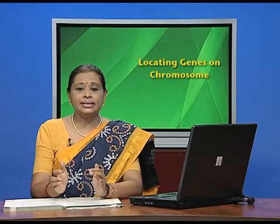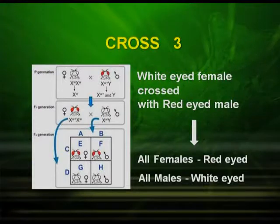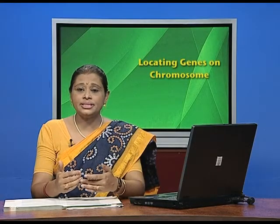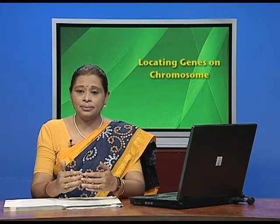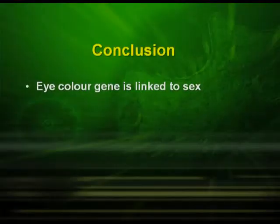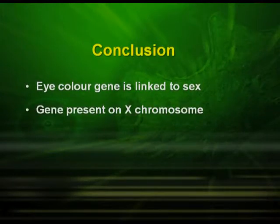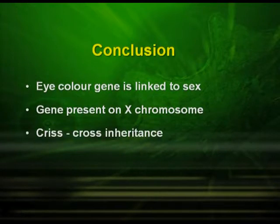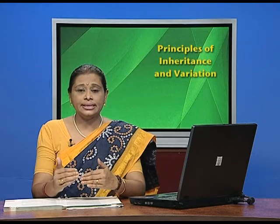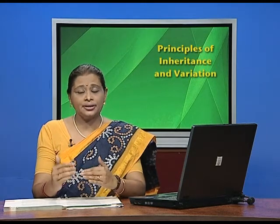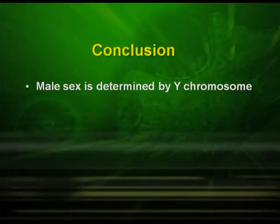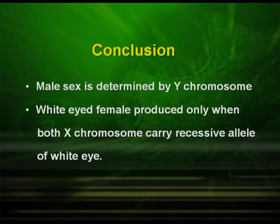He wondered what happened to the red-eyed male, so he made a third cross — between the white-eyed female and the red-eyed male. Surprisingly, the result was that all females were red-eyed and all males were white-eyed. The conclusions made by Morgan were: the eye-colour gene is linked to sex and is present on the X chromosome; there is criss-cross inheritance, meaning inheritance passes from father to daughter and from mother to son; and the white-eyed female is produced only when both X chromosomes carry the recessive allele of white eye.